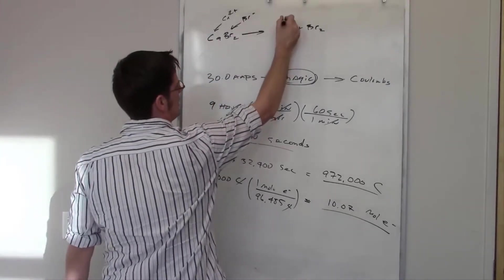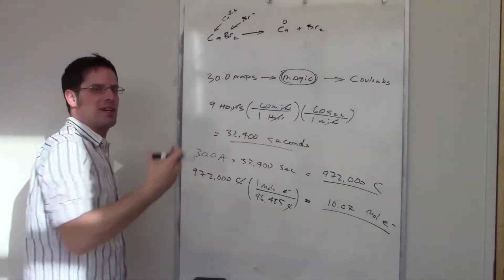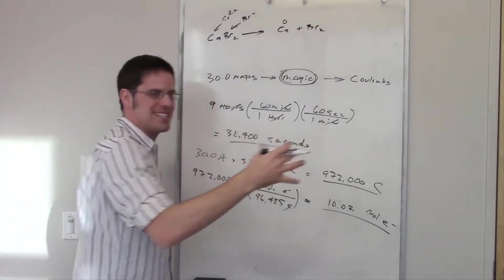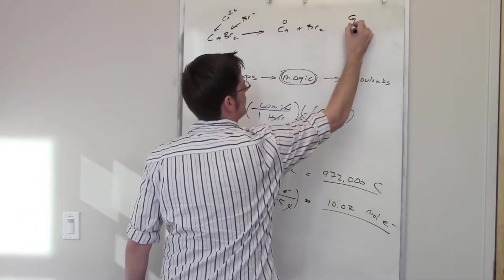So I'm going to separate this into half-reactions. Notice I've got Ca²⁺ going to Ca⁰. That is a positively charged calcium going to zero. It's becoming more negative, which means it's gaining electrons, which means that is reduction.